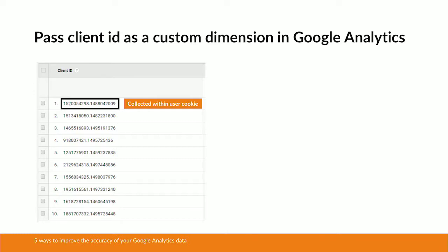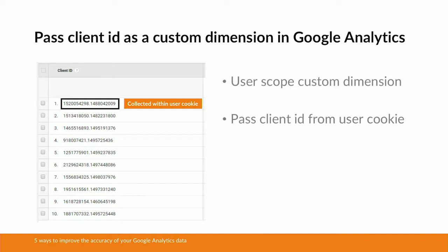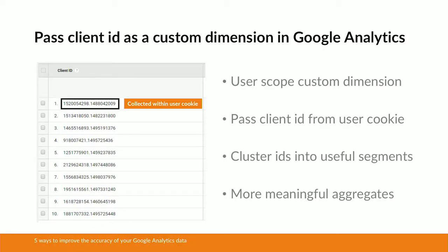We can start by passing the client ID as a custom dimension in Google Analytics. The client ID sits within the user cookie and it's what uniquely identifies each user in Google Analytics. So we can set up a user scope custom dimension within Google Analytics and then code that up on our site to pass the client ID from the user cookie. Doing that in effect gives you a row for every unique user in Google Analytics. Having that data at the granular level is fantastic because it means you can cluster the data in many different ways.